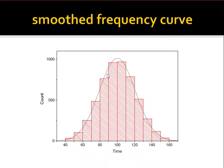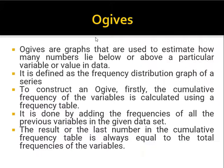The fourth type of frequency distribution graph is called an ogive or cumulative frequency curve. Ogives are graphs used to estimate how many numbers lie below or above a particular value in the given data. To construct an ogive, the cumulative frequency of the variables is calculated using a frequency table by adding the frequencies of all the previous variables. The last number in the cumulative frequency table will always equal the total frequency. There are two types of ogives: the less than ogive and the greater than (or more than) ogive.